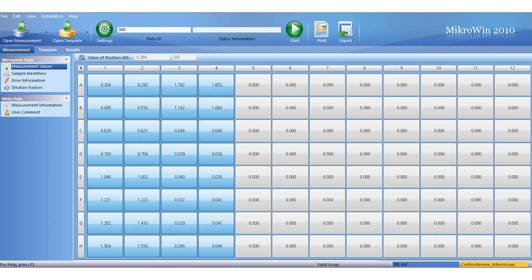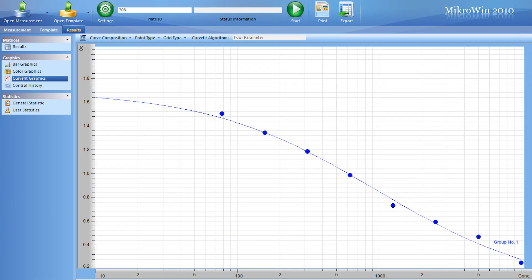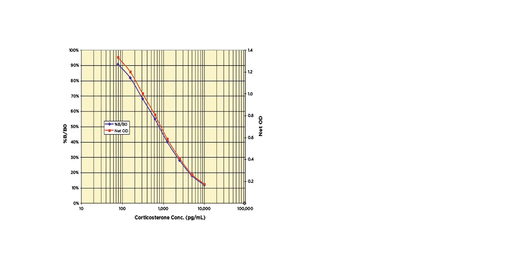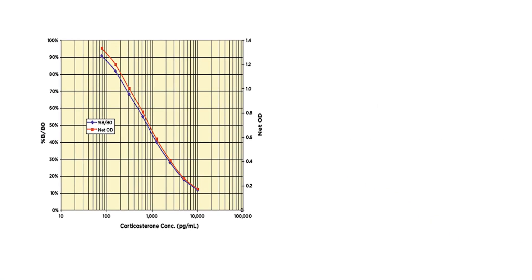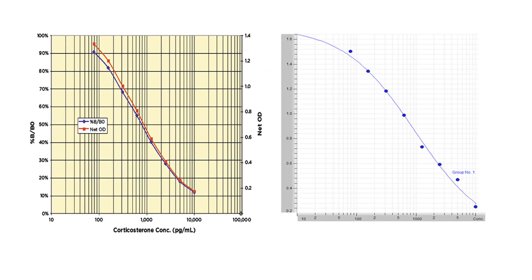We transfer our results to microwind data reduction software, where microwind generates our standard curve. Here we compare a typical normal range standard curve from Arbor Assay's Detect-X Corticosterone ELISA to the normal range standard curve microwind has generated.